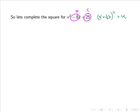Since b equals minus 8, a half b equals minus 4. So x minus 4, all squared, equals x squared minus 8x plus 16. That means k must be equal to 25 minus 16, or simply 9.